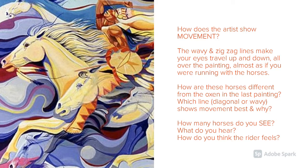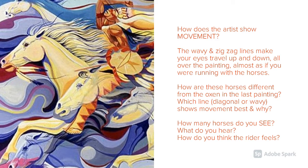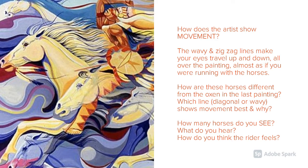How are these horses different from the oxen in the last painting? Which line — diagonal or wavy — shows movement best? How many horses do you see? What do you hear?